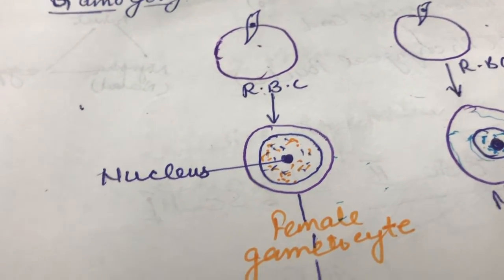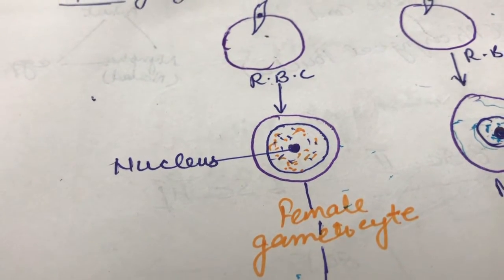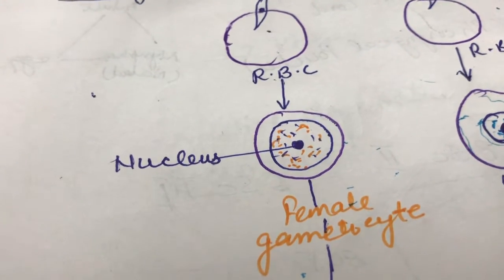Let me recall the overall cycle. We started with three phases: Schizogony, Gamogony, and Sporogony. Schizogony starts in human beings.